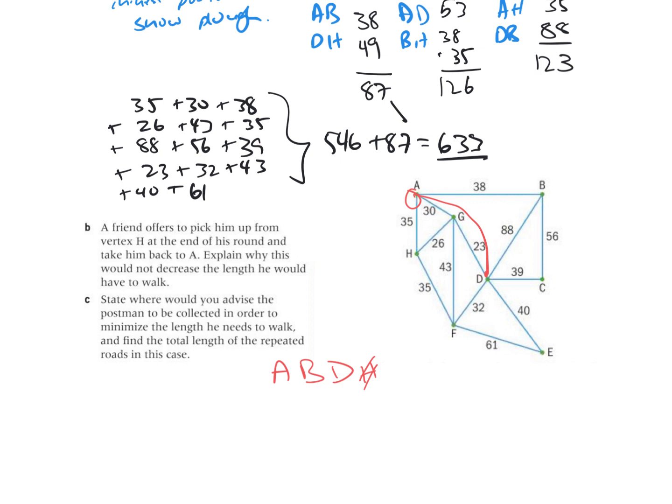I could go from A to D, making those odd. And so that would mean that if I go A to D, that means if I look at my vertices, I have to go from H to B somehow. Going from H to B the shortest way to do that is 38 plus 35.